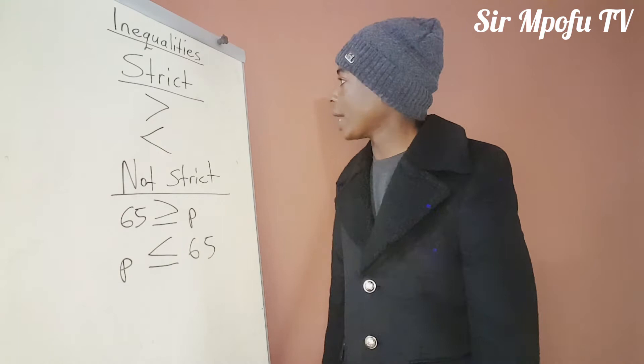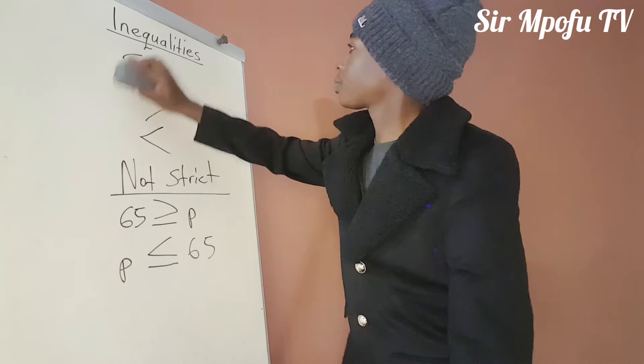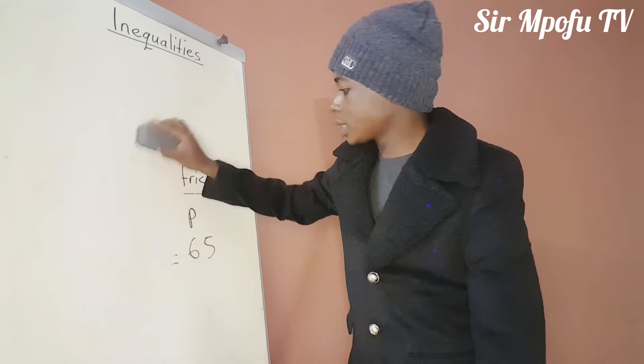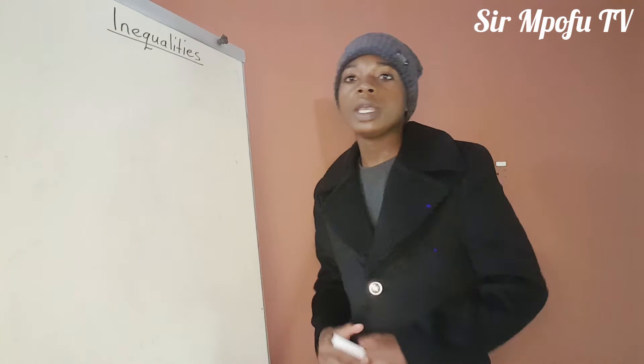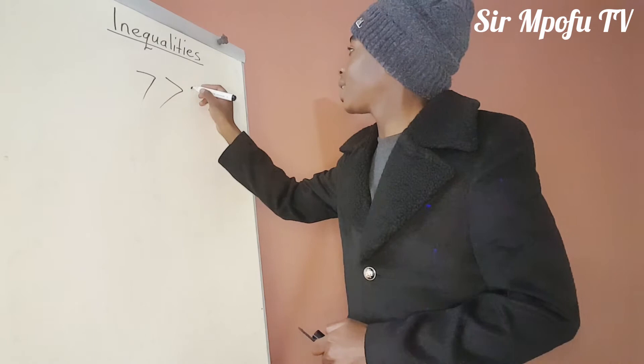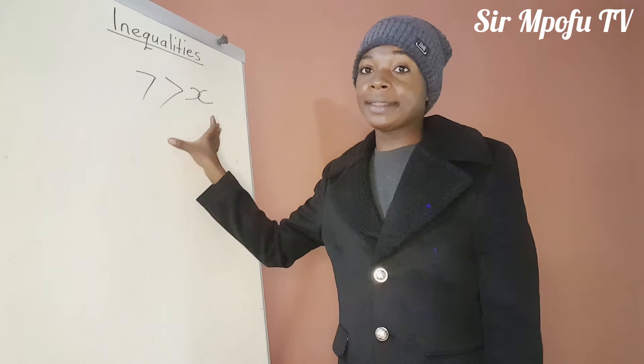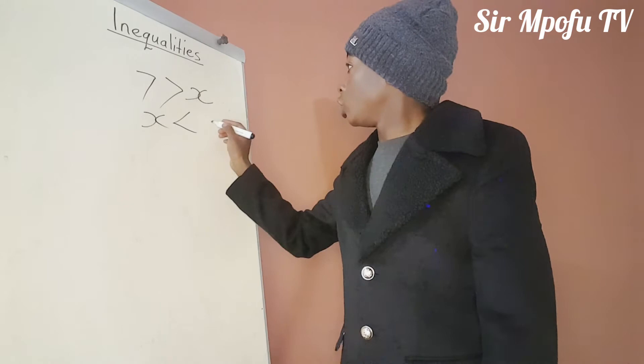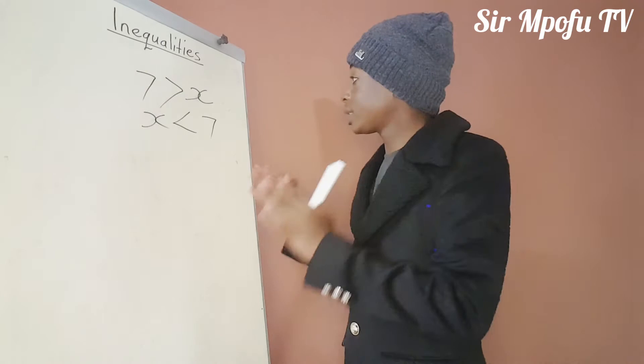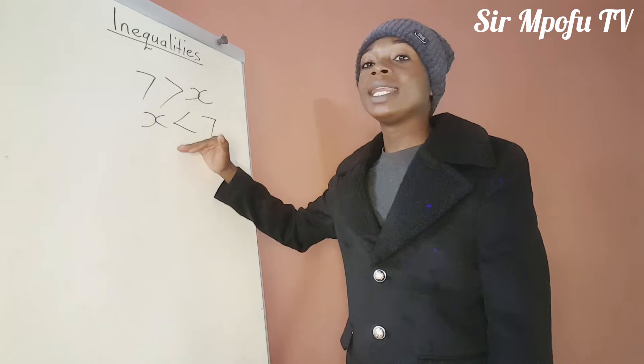Let me show you another concept. We can represent inequalities on a number line. In most exams they like to ask this. Represent 7 greater than X. So if you want to rewrite this starting with X, you must make sure that your sign is open to the number or term that it was open to. So this means 7 is greater than X, or X is less than 7. It can be written either way.